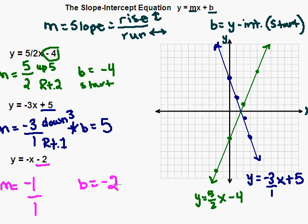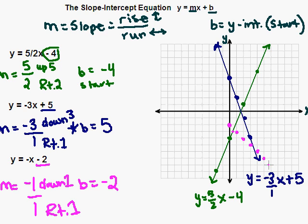We start with our y-intercept, going to negative 2 on the y-axis — 1, 2. Now we look at our slope: negative 1 over 1. Since it's negative 1, I go down 1, and for my run I have a positive 1, so I go to the right 1. From that starting point at negative 2, we go down 1 to the right 1, repeating several times. Then I connect those points with the best line I can, and there's my line representing y equals negative x minus 2.